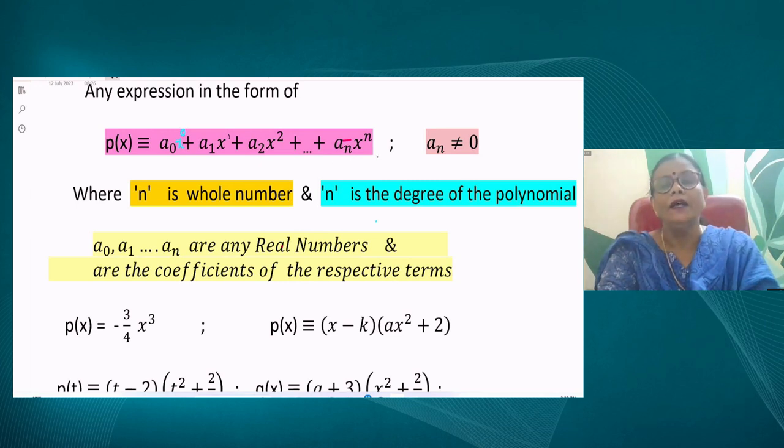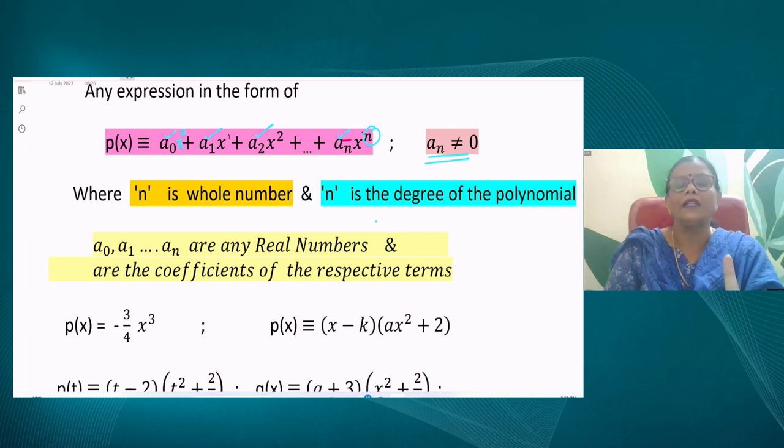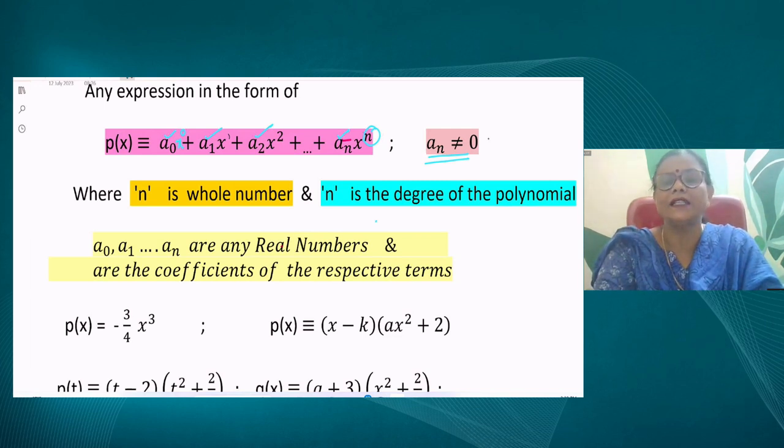The highest index of x is n, which constitutes the polynomials. We need to have the condition that the coefficient of the highest index, which is attached to x^n, should not be 0. Otherwise, this will not exist. That's the reason we should always have this as non-zero. The coefficients a_0, a_1 are all coefficients of respective terms. And n is the degree of the polynomial.